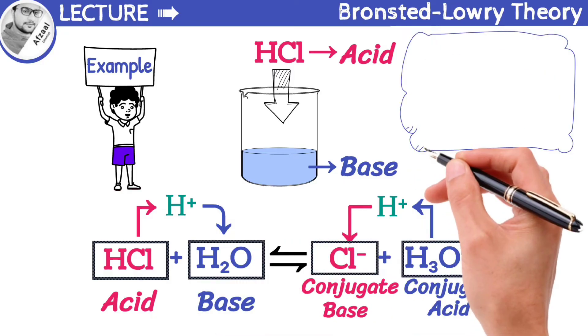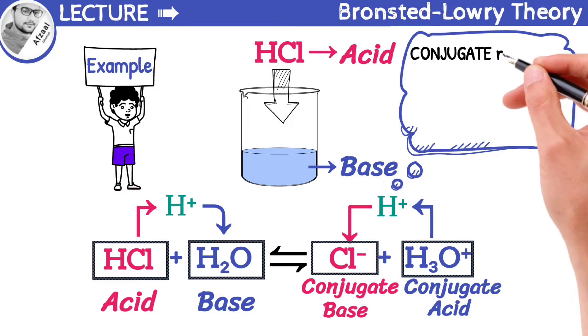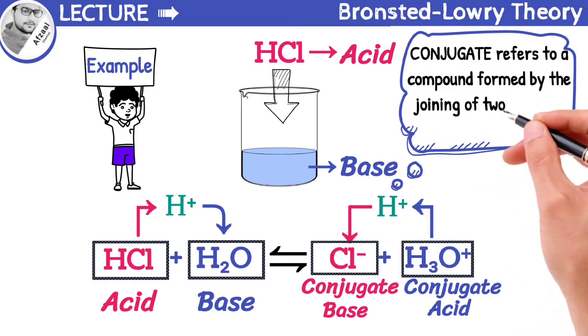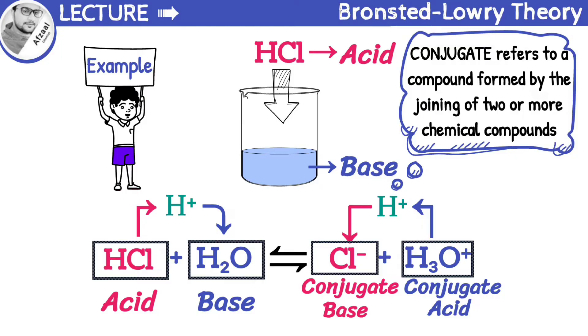What is meant by conjugate? Conjugate refers to compounds formed by joining two or more chemical compounds. According to the Bronsted-Lowry concept, a substance can act as an acid only when another substance simultaneously behaves as a base.